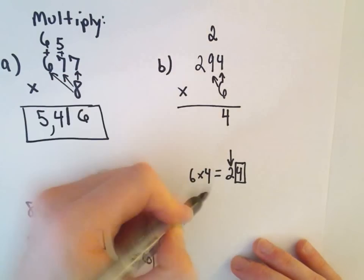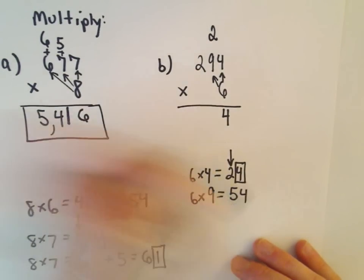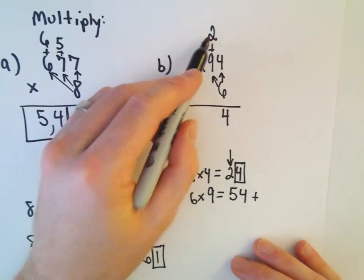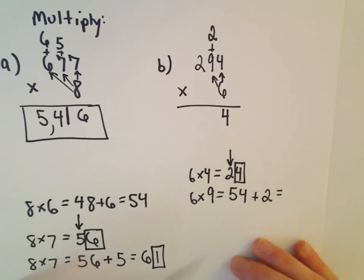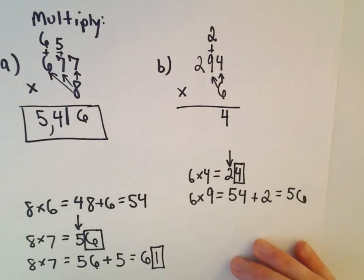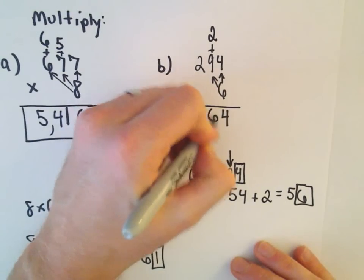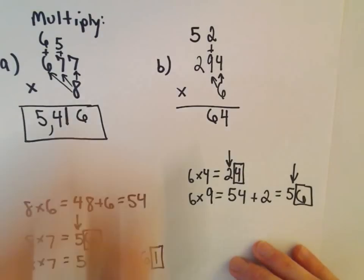Well, let's see, we'll do 6 times 9. 6 times 9 is 54. And then the same thing, we just add that value that we carried, which is a 2. So that's going to give us 56. Again, we keep that rightmost digit in the same column, the 6. We'll carry the 5 to the next column.